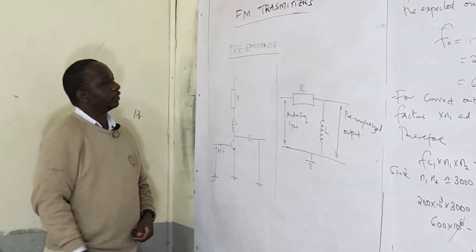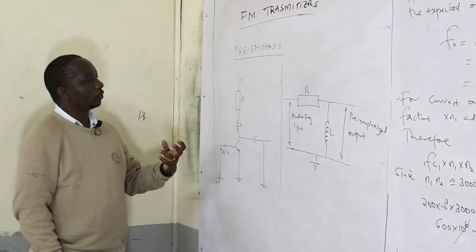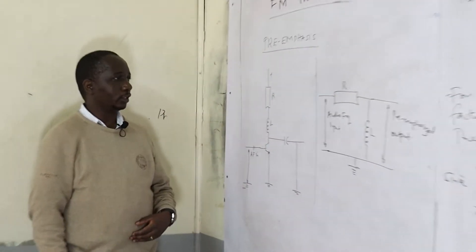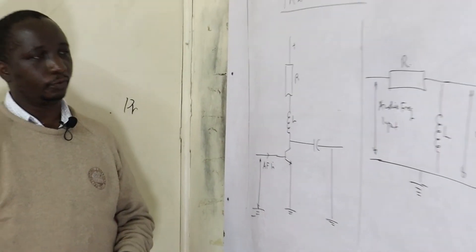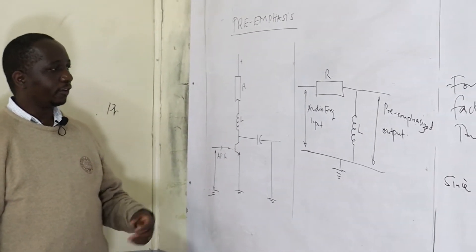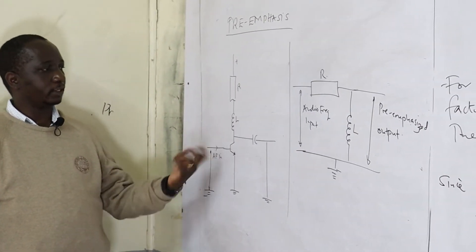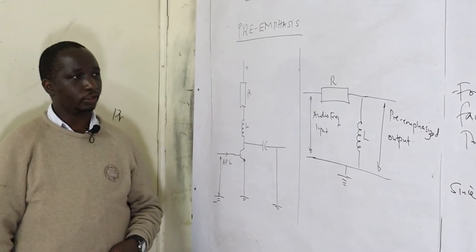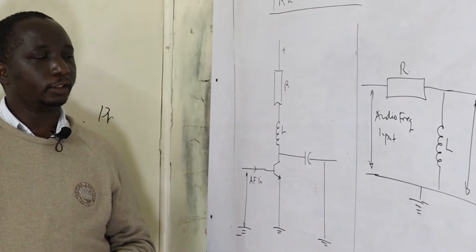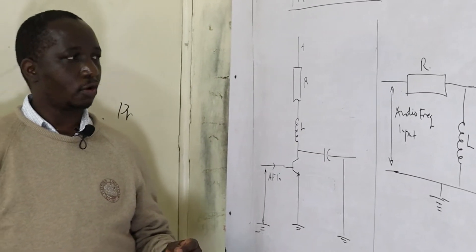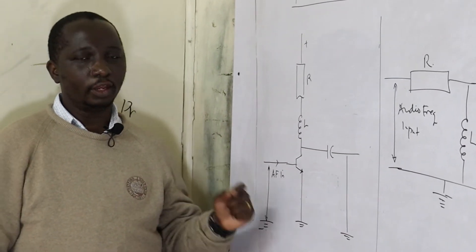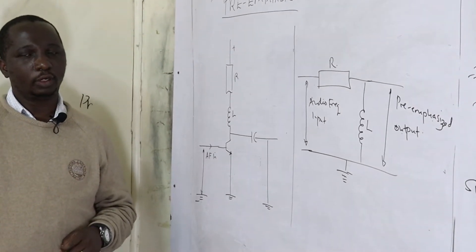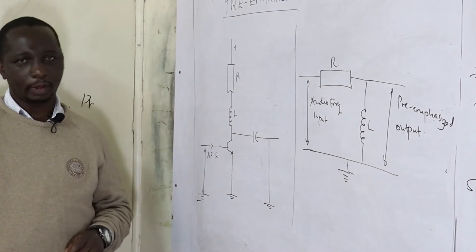When we're talking about pre-emphasis, we're looking at a way in which we can improve the low frequency signals relative to higher frequency signals. We shall have a circuit that has got an inductor and a resistor. The resistor is normally connected in series with the input signal, while the inductor is normally connected to the ground and across the output terminal.